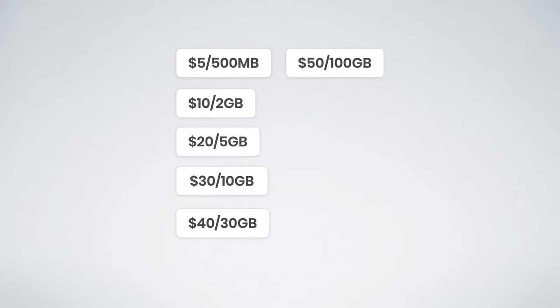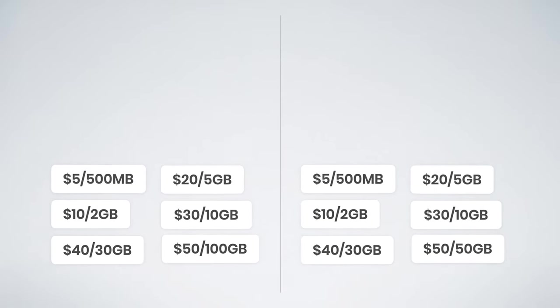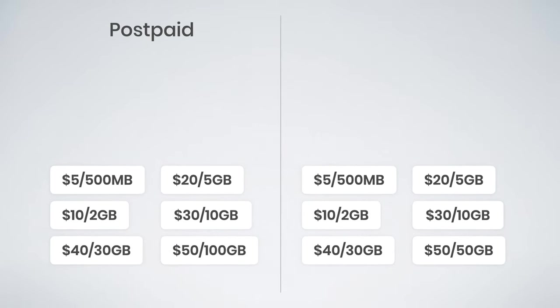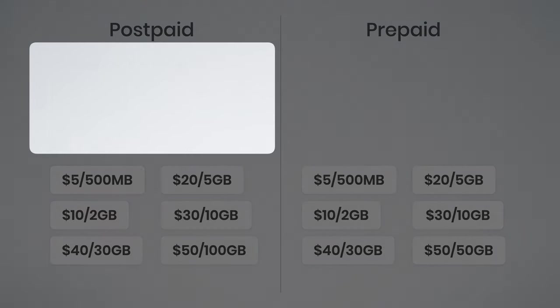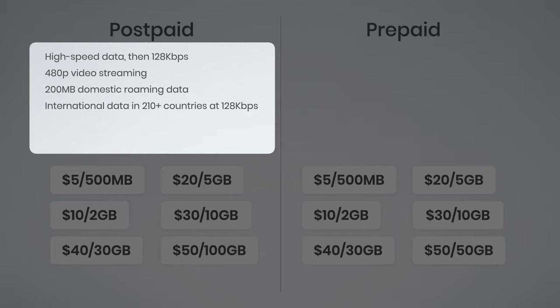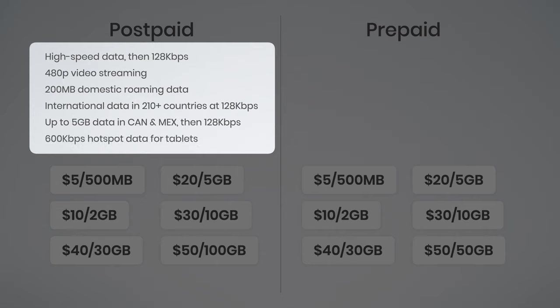Next, let's move on to the data plan options. These work in both tablets and hotspots, and there are actually two versions: postpaid and prepaid. The postpaid versions include high-speed data, then unlimited data at 128 kilobits per second. Video streaming is limited to 480p. You get 200 megabytes of domestic roaming data, unlimited international data in 210 supported countries at 128 kilobits per second, up to 5 gigs of high-speed data in Canada and Mexico, and if using a tablet, unlimited hotspot data at 600 kilobits per second to share with other devices.